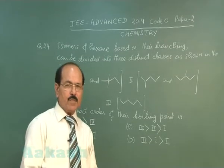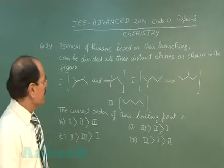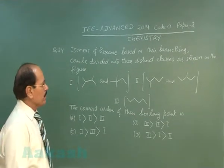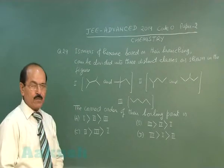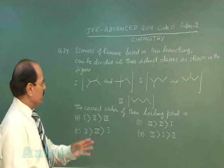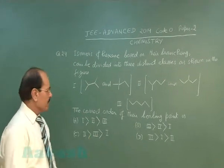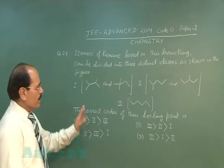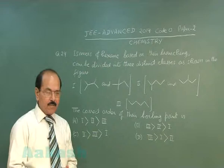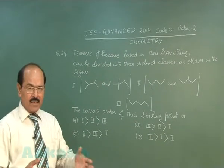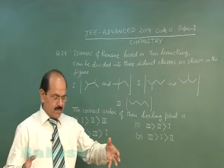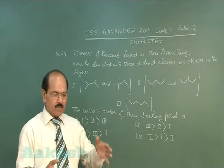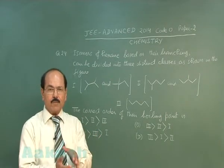Now, let us see question number 24. Isomers of hexane based on their branching can be divided into three distinct classes as shown in the figure. The correct order of their boiling points: if we compare the boiling points of isomers of alkanes, straight chain alkanes have the highest boiling point because of strong intermolecular force of attraction.